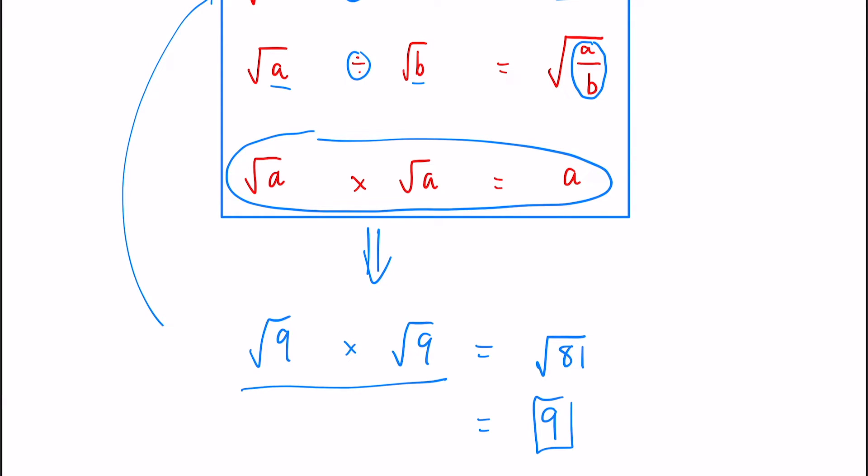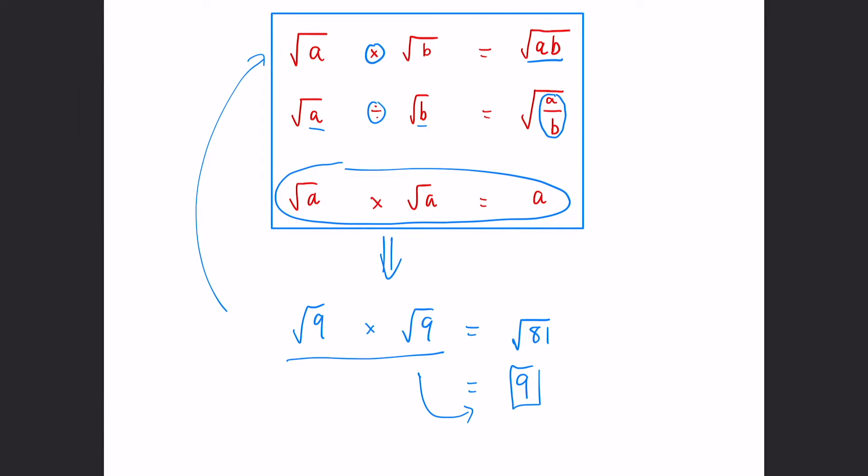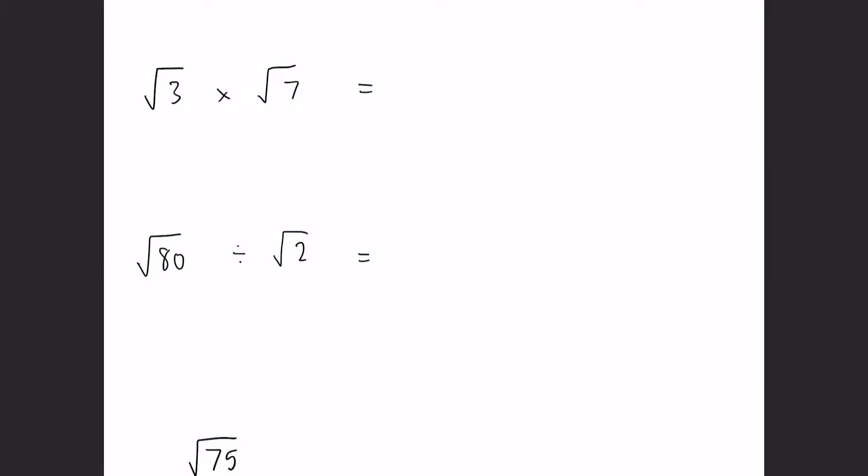So as you can see, these two times together just makes the original number without the root. And this would work for any number. Okay, let's look at some examples.